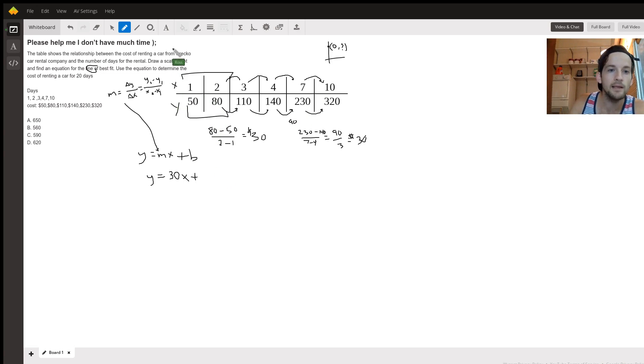So if I only knew, I'm going to go back up here to this table, I have x-values of 1, 2, 3, 4, 7, 10. If I only knew for x equals zero, if I only knew what this y-value was, I would have my y-intercept.